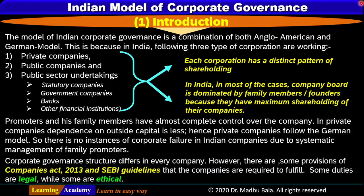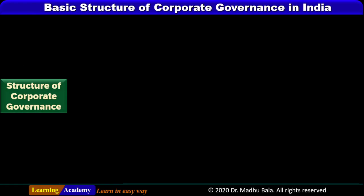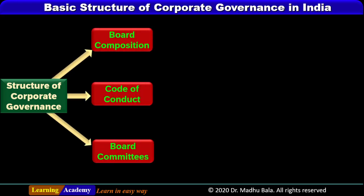Corporate governance structure differs in every company. However, there are provisions of the Companies Act 2013 and SEBI guidelines that companies are required to fulfill. Some duties are legal while some are ethical, based upon moral grounds. The structure of corporate governance in India is composed of board composition, code of conduct, and board committees.